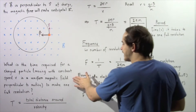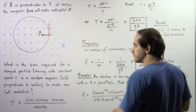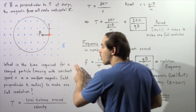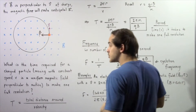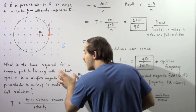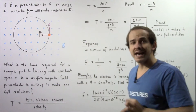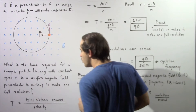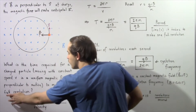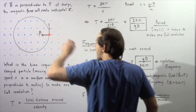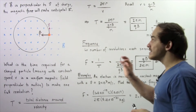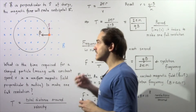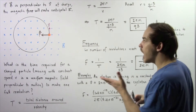Now let's explore and answer the following question: what exactly is the time required in seconds for our charged electric charge moving with a constant speed V in a uniform magnetic field that acts perpendicularly with respect to the motion to make one full revolution about the following pathway? This is commonly known as the period — the period gives us the time in seconds that it takes our object to make one full revolution.